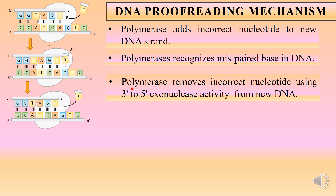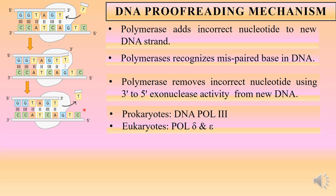The first job is to remove the incorrect nucleotide. DNA polymerase removes this incorrect nucleotide using its 3' to 5' exonuclease activity from the new DNA strand. You can see that the incorrect nucleotide is being removed. This is possible by the 3' to 5' exonuclease activity of the polymerase. Prokaryotes have five types of DNA polymerases, and all these polymerases have 3' to 5' exonuclease activity.